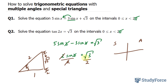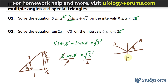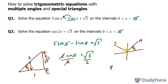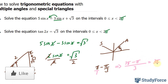Since sine is opposite over hypotenuse, the opposite of pi over 3 is the square root of 3 and the hypotenuse is 2, so pi over 3 is our reference angle. For quadrant 1, the angle is pi over 3. For quadrant 2, we take pi and subtract pi over 3. Finding a common denominator of 3: 3 pi over 3 minus pi over 3 gives us 2 pi over 3. That is the second angle.